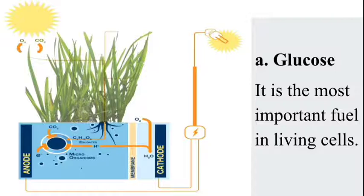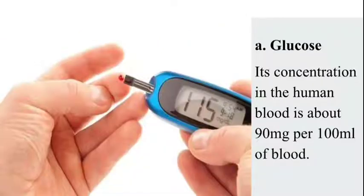There are three types of monosaccharides. The first is glucose. Glucose is the most important fuel in living cells — it is the molecule used as fuel in every living cell. In eukaryotic cells, the mitochondria produce 38 ATPs from a single glucose molecule. ATPs are energy-rich compounds, so glucose serves as a fuel for energy production in all living organisms. Its concentration in human blood is about 90 mg per 100 ml of blood.